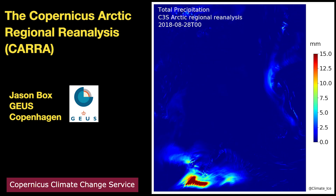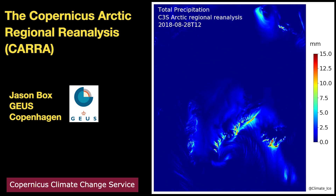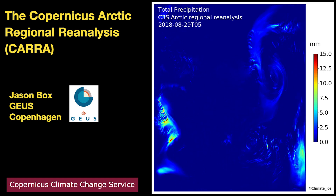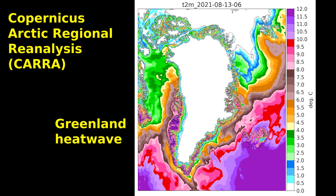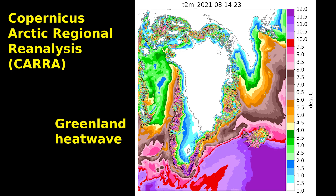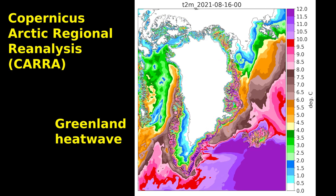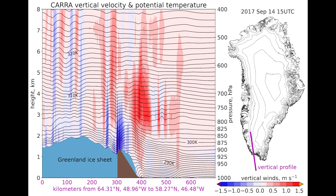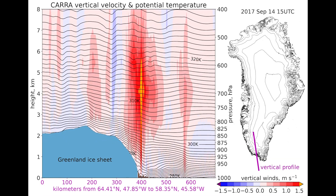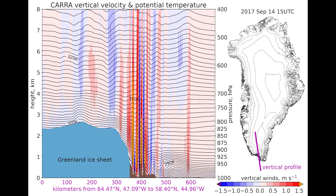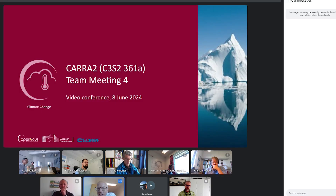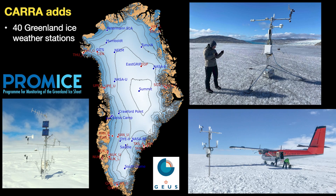In preparation for a study I will describe in a future video, I realized it's helpful to first describe an amazing new data source called the Copernicus Arctic Regional Reanalysis, or CARA for short. In this video I will define what a reanalysis is and give some detail to CARA. I have been on the CARA team since 2018, contributing data from the Greenland ice sheet recorded by Automatic Weather Stations from the Geological Survey of Denmark and Greenland, GEUS, where I've worked the last 10 years.